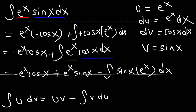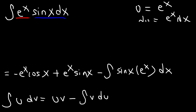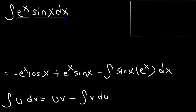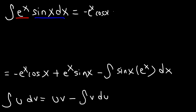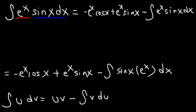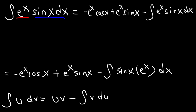Starting with the original expression, this integral is equal to negative e to the x cosine x plus e to the x sine x, minus the integral of e to the x sine x dx. Our goal is to find this integral, and notice that the integral on the right is the same as the one we started with — so because they're like terms, we can add them.